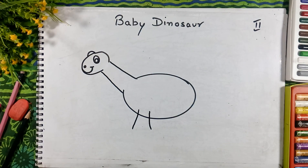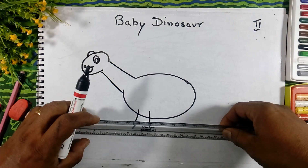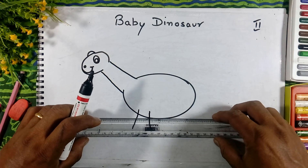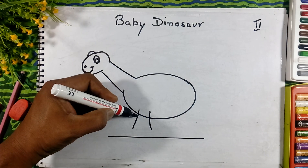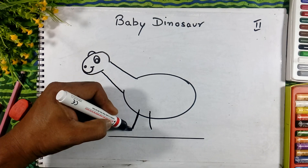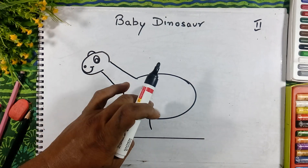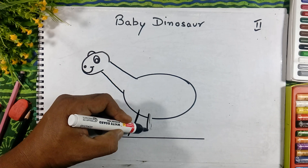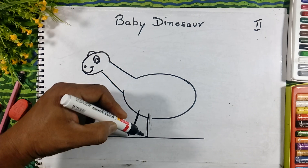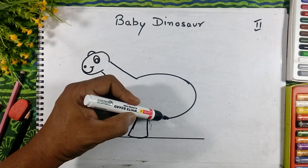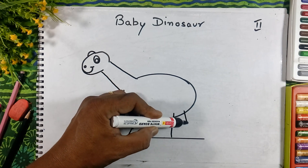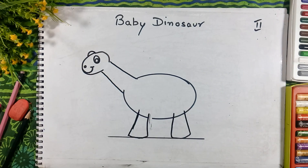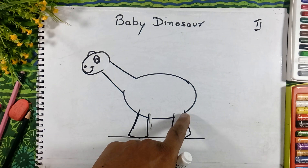Then we will draw the legs here. First we will take a ruler and keep it here for the legs. Draw the back leg like this, drop the line here.